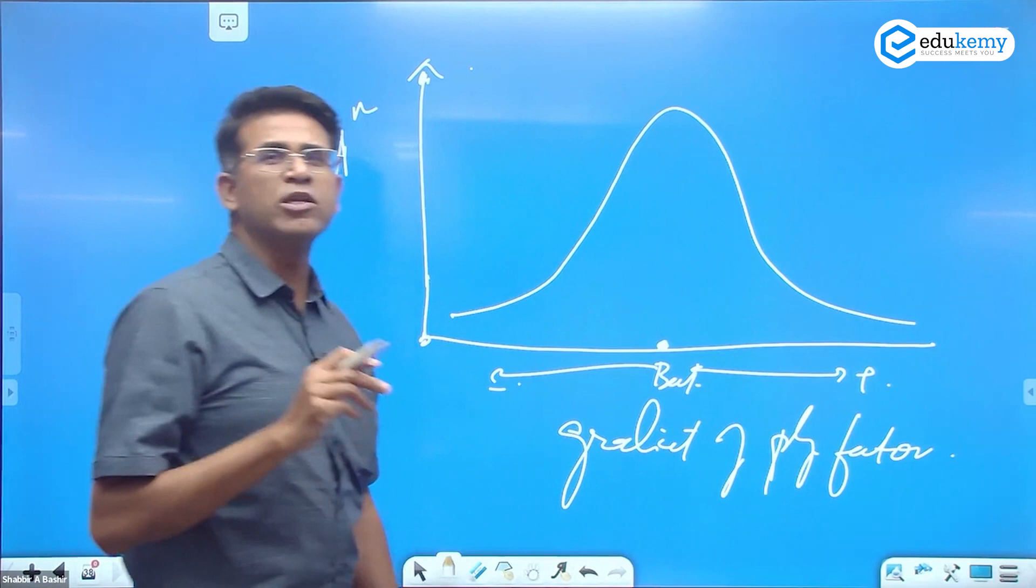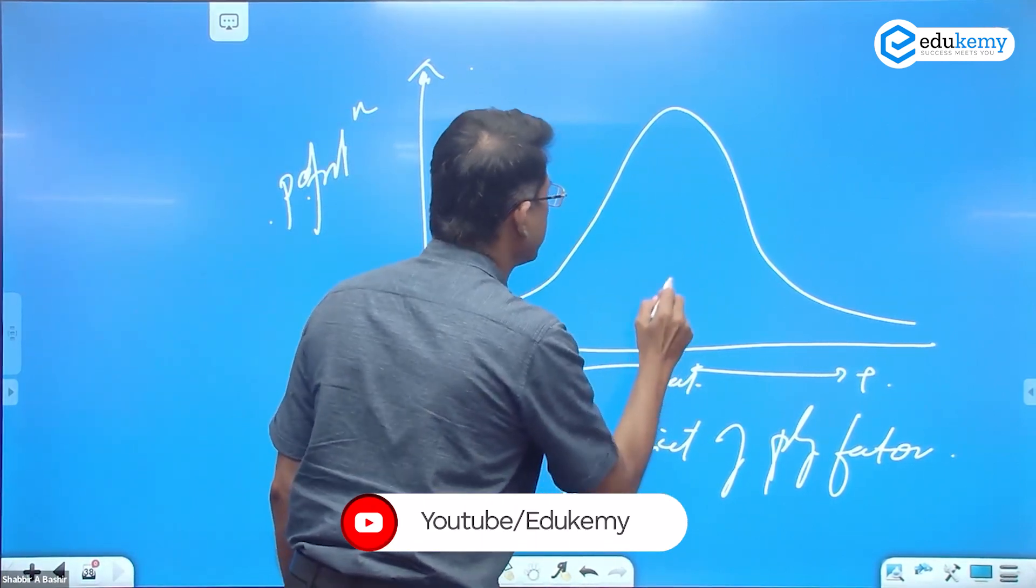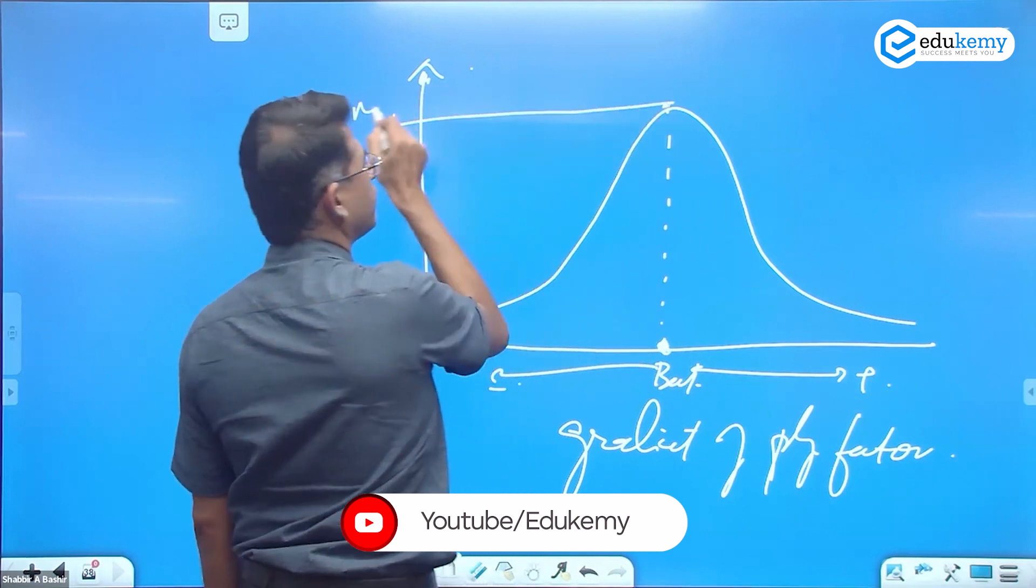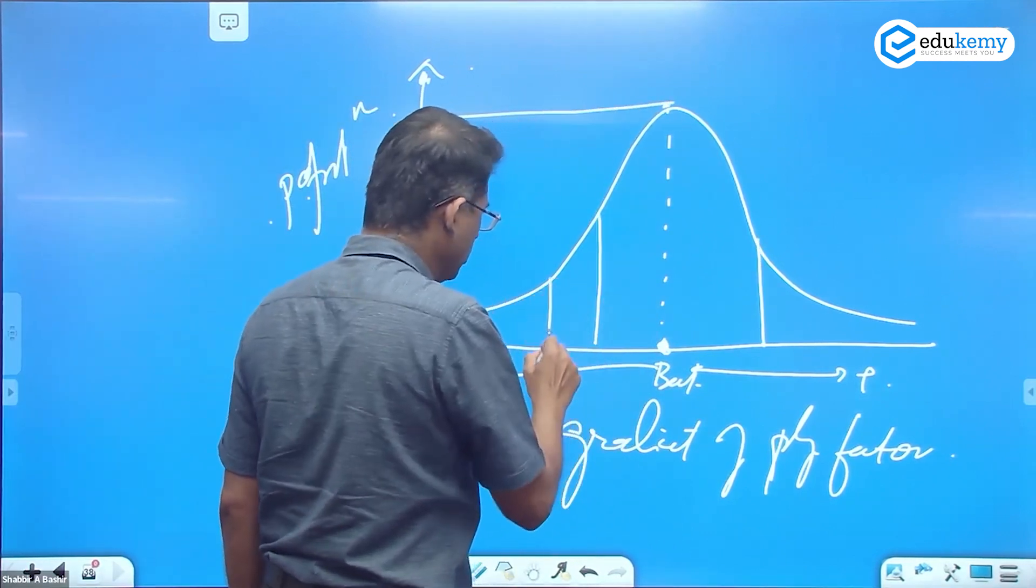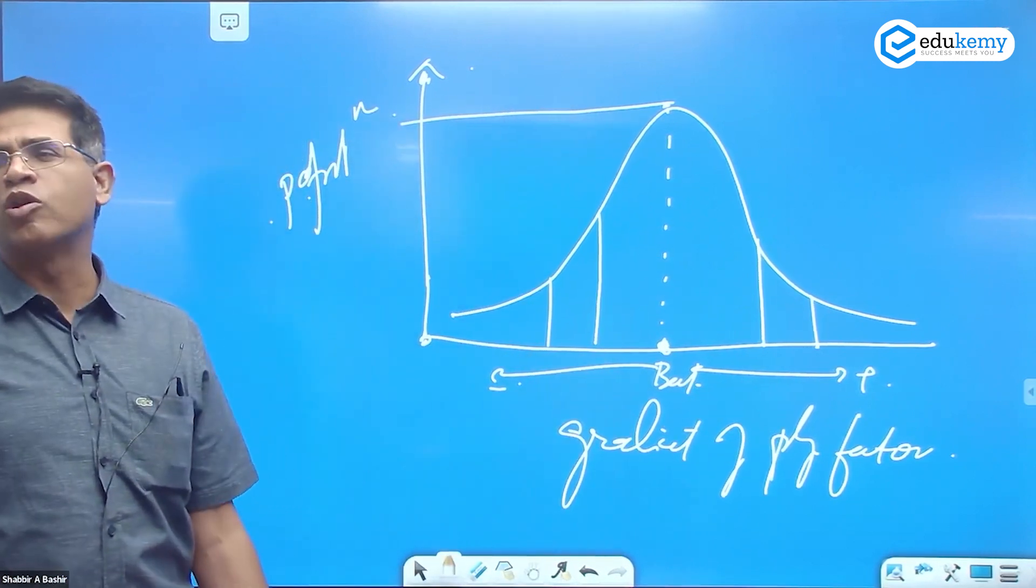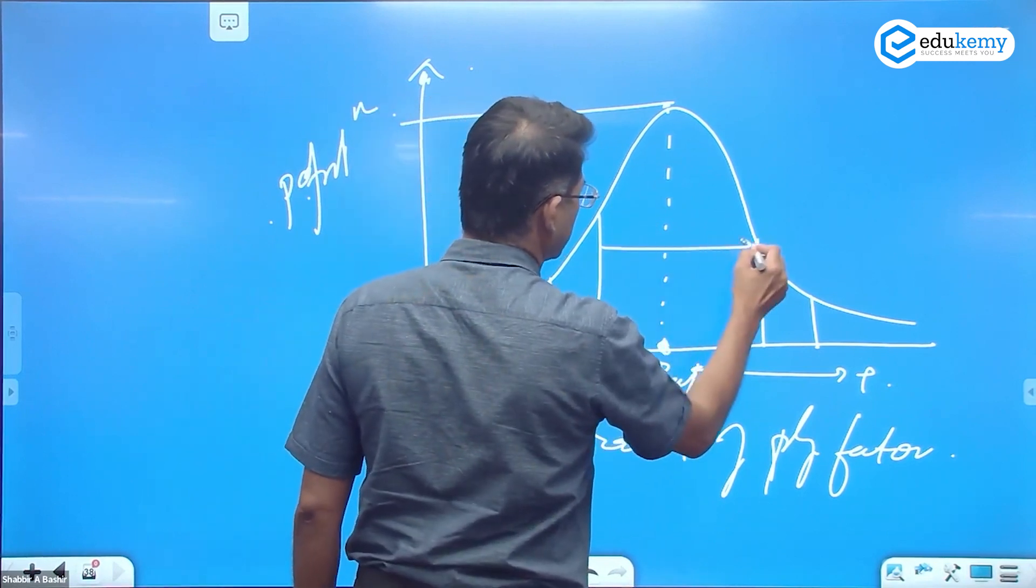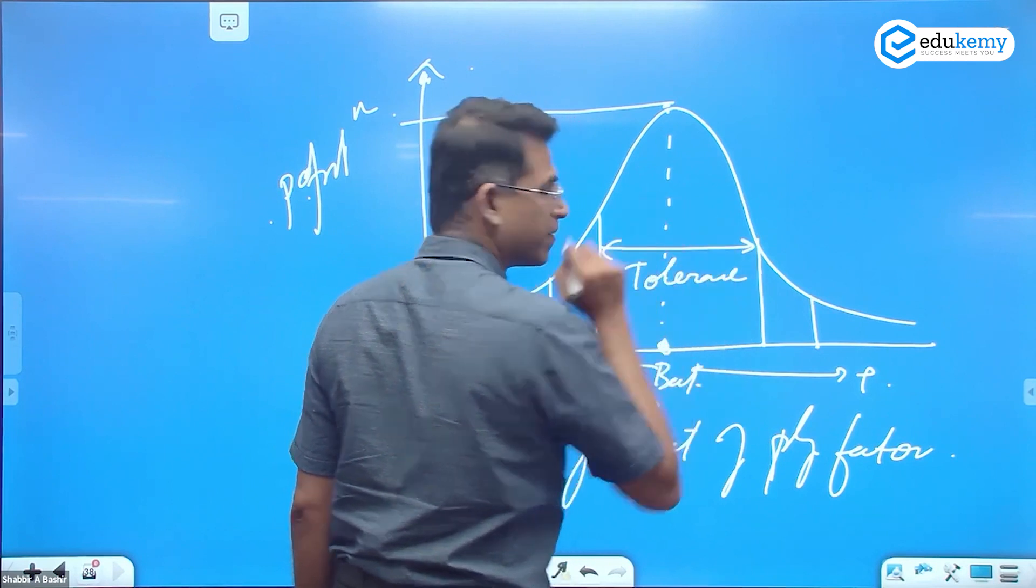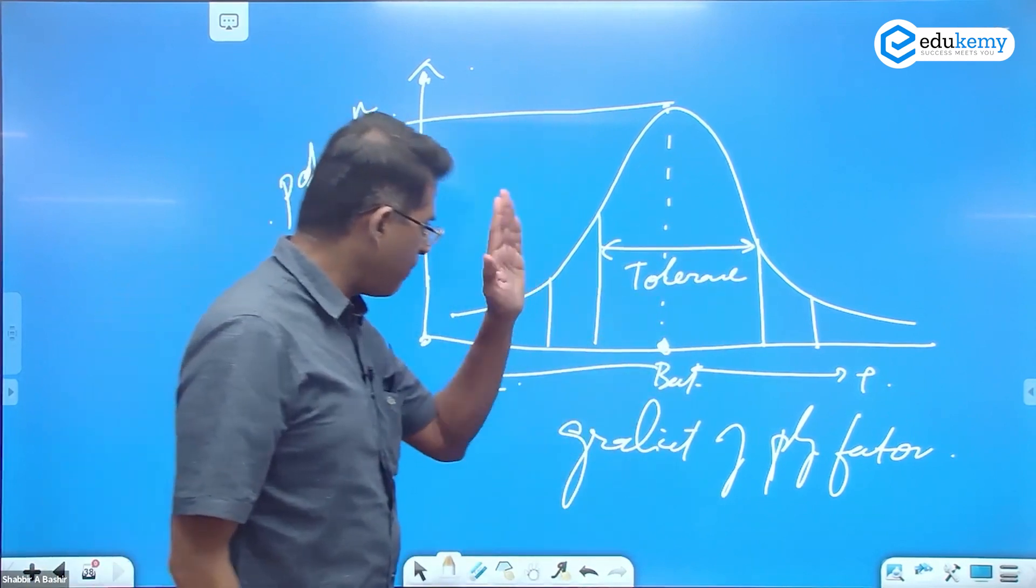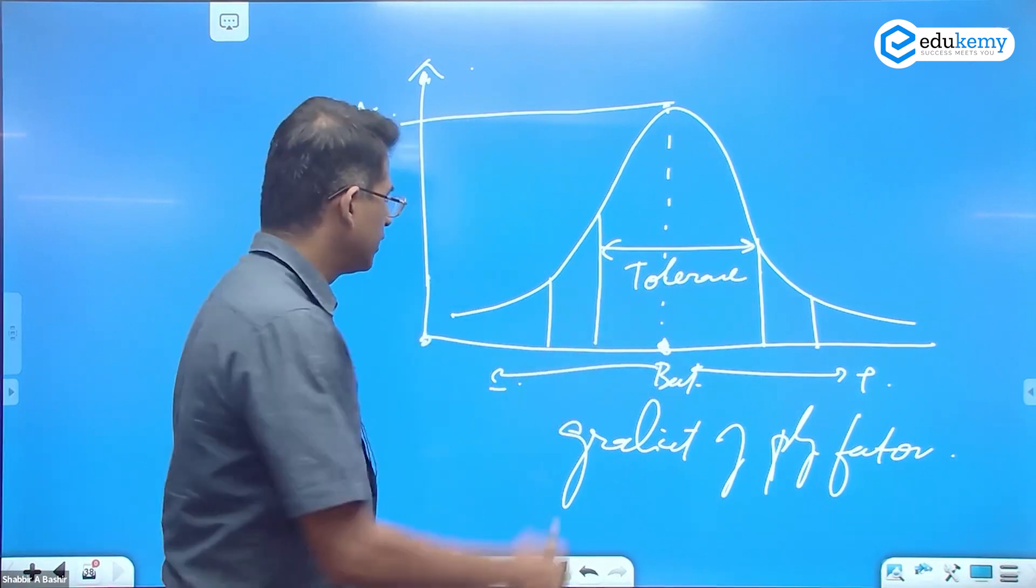It's called as normal distribution. Where the best optimum conditions are, there you have maximum population. You move away from it, there is a zone of stress and then there is a zone of intolerance. This is called as the zone of tolerance. Life forms here best survive, but they can survive this range.